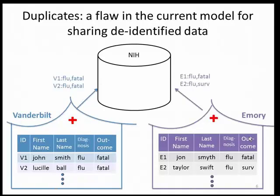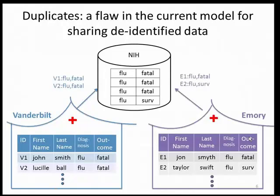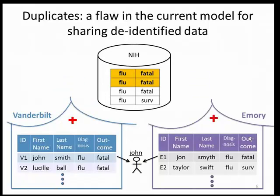The NIH then aggregates that information and stores it in a central repository. However, records v1 and e1 actually refer to the same individual, John. The right answer to the question is that two people had flu and died, but if you look at the information stored at the NIH, the results would be an overestimate — it would be shown that three people died with flu, and two of those refer to John.